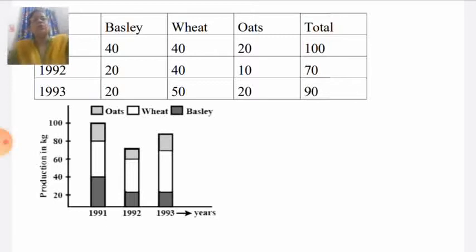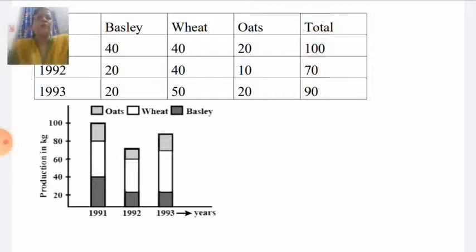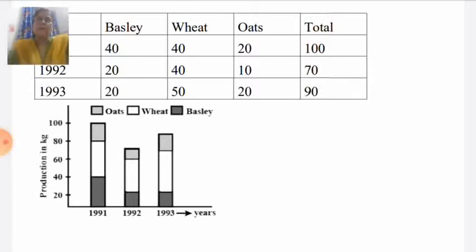By this we can know about the magnitude of the different parts. In this type of bar diagram, we should use different colors for showing different components in the subdivided bar diagram, so that it will be more clear and attractive. We should also mention the colors used separately in the bar graph.